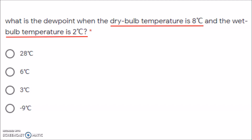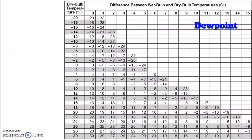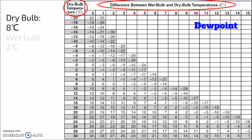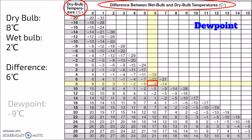What is the dew point when the dry bulb temperature is 8 degrees Celsius and the wet bulb temperature is 2 degrees Celsius? We have a chart that works with dew point instead of relative humidity. The dry bulb is 8 degrees and the wet bulb is 2 degrees, giving a difference of 6 degrees. Looking at the dew point chart, the dry bulb column of 8 and the difference column of 6 overlap at negative 9. Our dew point is negative 9 degrees Celsius — the temperature needed for the water vapor to condense into water.